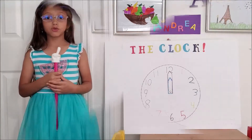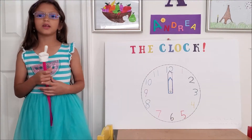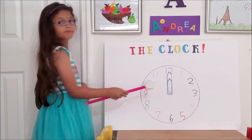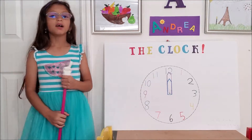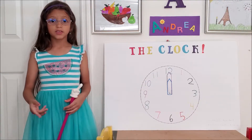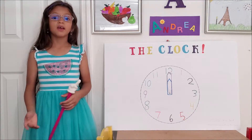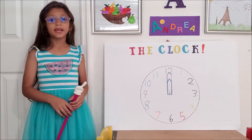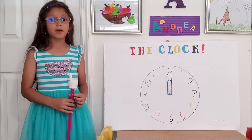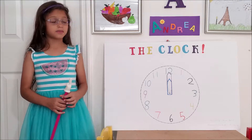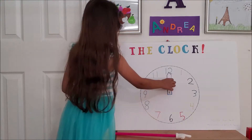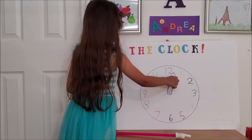If it is 12 o'clock, both hands will be on the number 12. Then, as time passes, both hands will start moving. The minute hand moves faster. The hour hand moves slower. As I said, both hands move.